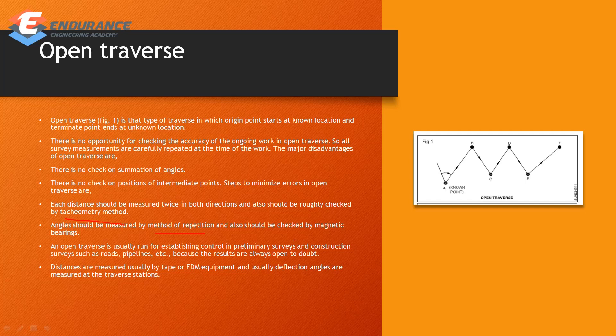You can check the magnetic bearing as a checkpoint and verify the angles. Open Traverse is usually run for establishing control in preliminary surveys and construction surveys such as roads, pipelines, etc.